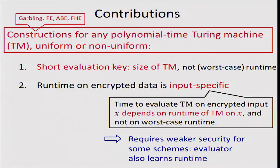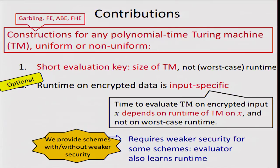Second, the running time on the encrypted data is input-specific: the evaluation over encrypted data depends on the time to run the Turing machine on the specific input and not on the worst-case running time. This inherently means the evaluator learns the running time on a specific input, which sometimes leaks information about that input. So for some schemes, such as functional encryption, we require a weaker security definition — specifically, the original definition except that the evaluator also learns the running time on the specific input X. We provide two types of schemes: one with input-specific runtime and the weaker security definition, and one with worst-case running time and the standard security definition, but still enjoying the short evaluation key.